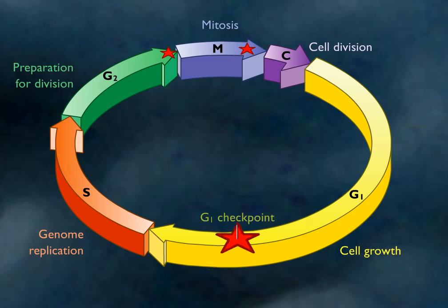The G1 checkpoint makes the key decision as to whether the cell should divide, delay division, or enter a resting stage.